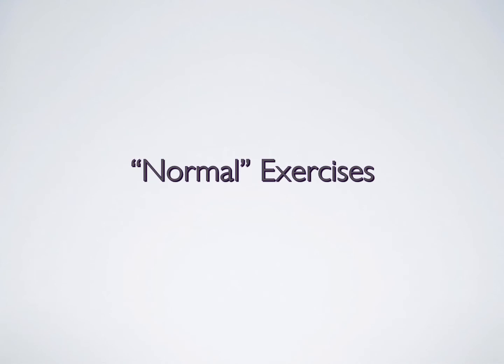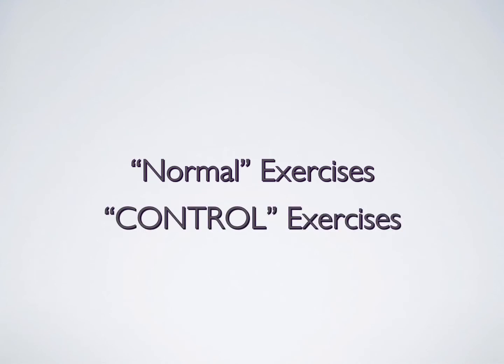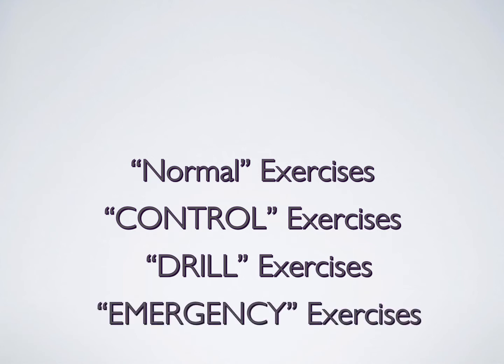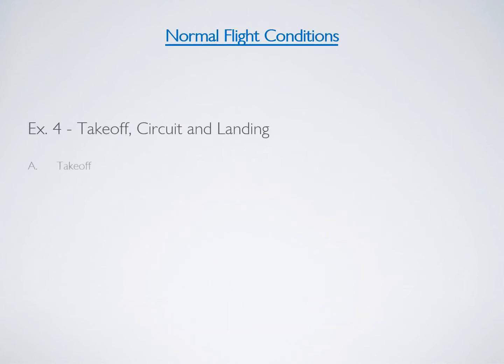Even though the flight test guide doesn't organize the exercises this way, I'm going to look at the air exercises in four different categories: normal, which includes the takeoff, the circuit, and the landing; the control exercises, which focus on controlling the aircraft in different phases of flight; the drill exercises, which focus on engine failure exercises; and the emergency exercises, which focus on checklist use.